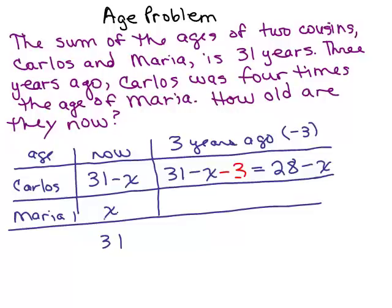And how about Maria? How old would she be three years ago? Right now she's X. So three years ago she was X minus 3. So this is just to keep track of their ages in these two different time periods, right now or three years ago.